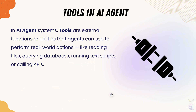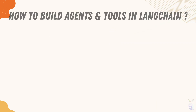The AI agent requires what are called tools, which are like external functions or utilities that agents can use to perform real-world actions like reading files, querying a database, and similar things. You can basically think of tools as an access mechanism for the large language model to interact with external systems.